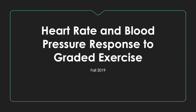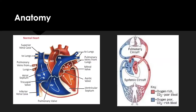We're looking at heart rate and blood pressure response to graded exercise. First we'll talk about heart physiology, then how exercise affects the heart. Starting with anatomy: the heart is just a pump — it takes in blood and pumps it out to the rest of the body or to the lungs. The right side handles deoxygenated blood, which enters through the right atria, goes into the right ventricle, and pumps out to the lungs. Oxygenated blood from the lungs enters through the left atria, goes into the left ventricle, and pumps out to the rest of the body.